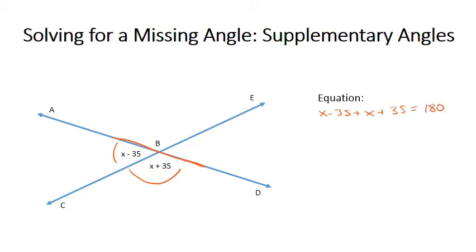I know that might look a little bit scary. But again, I can combine like terms. So I have two x's. I can rewrite that as 2x. And then I have a minus 35 and a plus 35. So if you imagine I get 35 and then I take away 35, that becomes just plus 0.